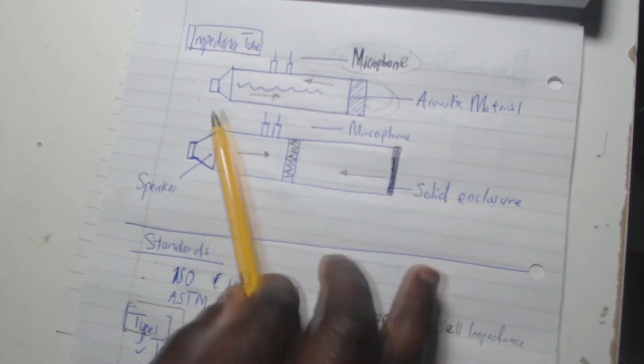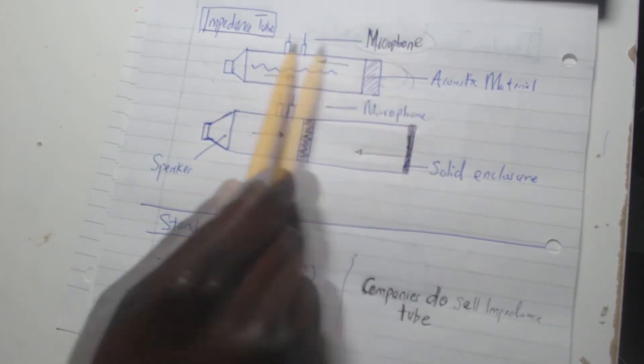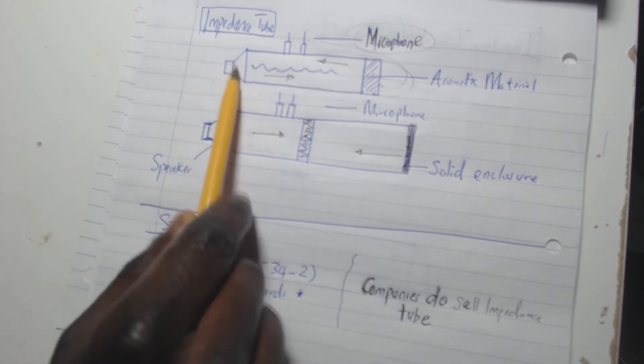and what they are. Basically, as the name suggests, impedance tube is a tube which basically serves different purposes for engineering, especially when we are trying to test acoustic materials. So as you can see here from the first diagram here,